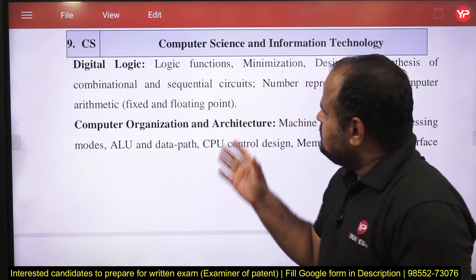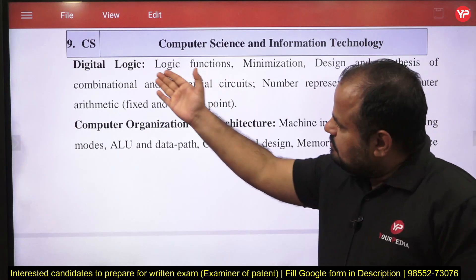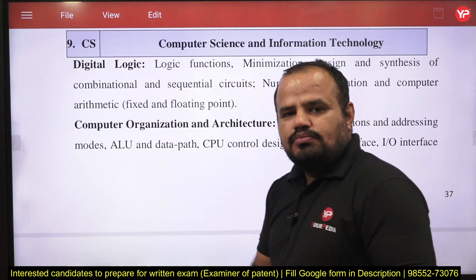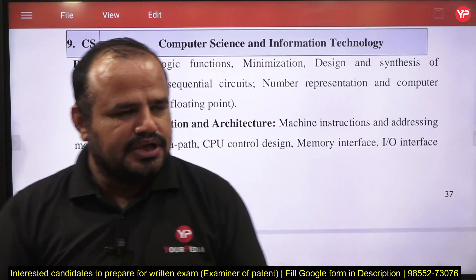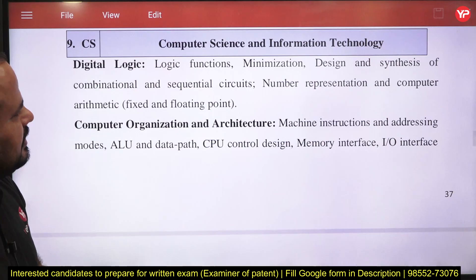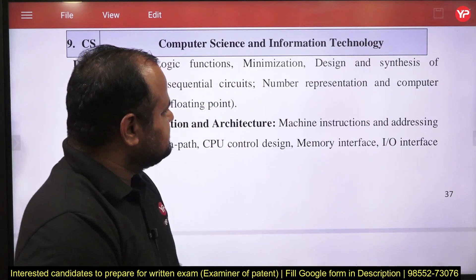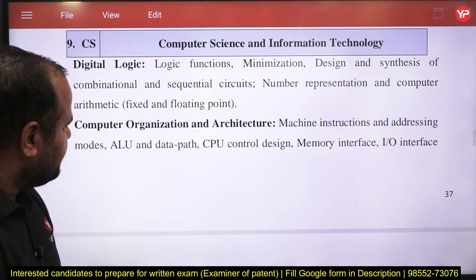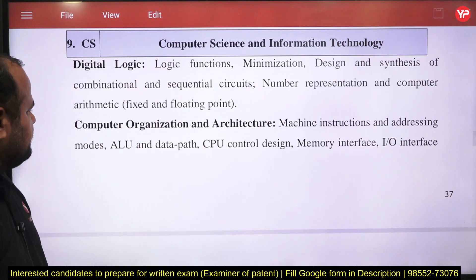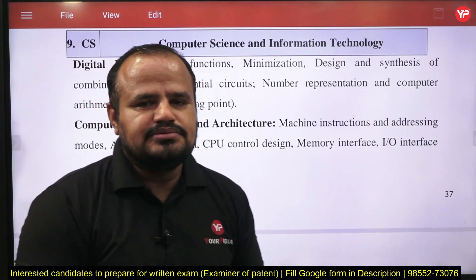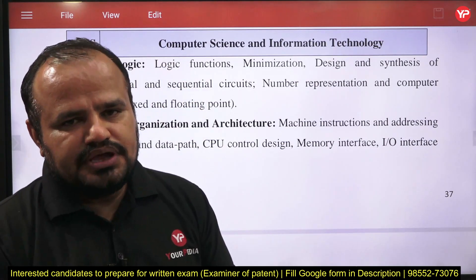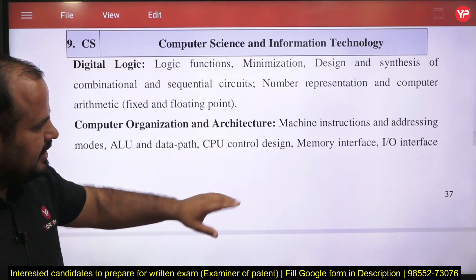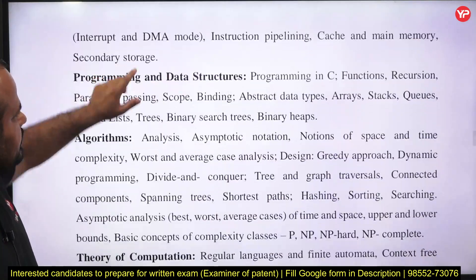For the computer science syllabus, the first topic is Digital Logic — the syllabus closely mirrors GATE. Topics include minimization, number systems, floating point number systems, combinational circuits, and sequential circuits. For Computer Organization and Architecture (COA), the syllabus is again GATE-aligned, covering addressing modes, memory, input/output devices, and the control unit.